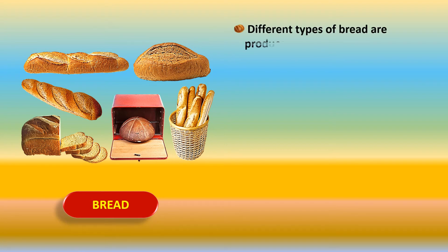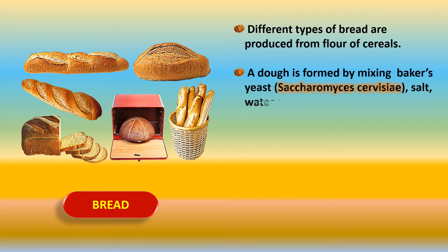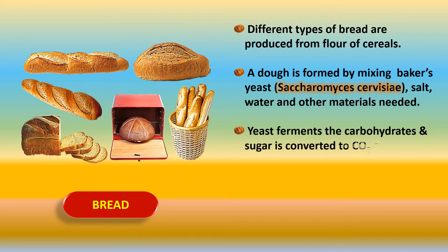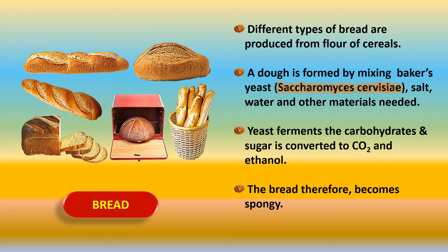Next we have the production of bread. Different types of bread are produced from the flour of cereals — wheat, rice — ground into flour. A dough is formed by mixing baker's yeast, also called Saccharomyces cerevisiae, with salt, water, and other materials. The yeast ferments the carbohydrates, converting sugar into carbon dioxide and an alcohol called ethanol. The bread becomes spongy because the carbon dioxide gas is trapped in little holes in the bread when it is baked.